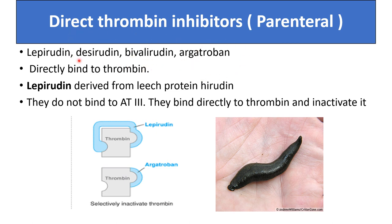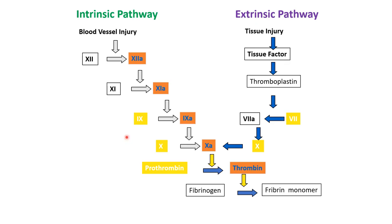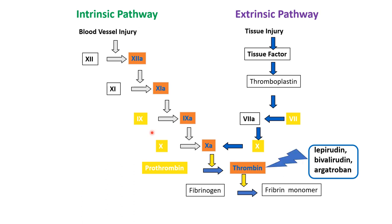These are direct thrombin inhibitors that bind with thrombin and inhibit it. Lepirudin is derived from the leech protein hirudin. They do not bind with antithrombin 3; instead, they bind directly to thrombin and inactivate it. Lepirudin, bivalirudin, and argatroban act on thrombin directly.